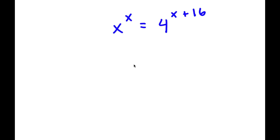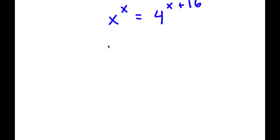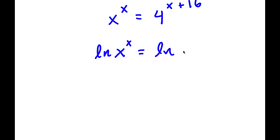In this problem, I have x to the power of x is equal to 4 to the power of x plus 16. The first thing I'm going to do is take the ln, or natural log, on both sides. So now I have ln of x to the power of x is equal to ln of 4 to the power of x plus 16.